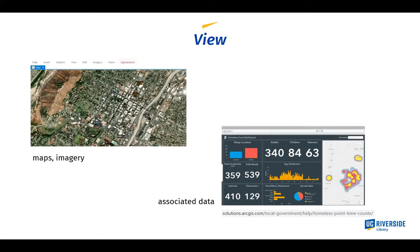GIS can be used to view things, create things, and analyze. For viewing, you can look at maps or imagery. Recently, capabilities have been developed where you can also view associated data alongside a map — for example, a heat map of homeless counts in a particular area combined with a dashboard showing other useful related information.